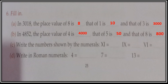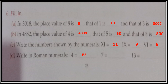Now write the number shown by the numerals. XI is equal to 11. IX is equal to 9. VI is equal to 6. Now the last one — write in Roman numerals. For 4, the answer is IV. For 6 it is VI. Why? Because when the smaller number is to the right of the greater number, we add: V = 5 and I = 1, so 5 + 1 = 6. But for 4, it is opposite — I is to the left of V, so we subtract: 5 − 1 = 4, giving IV.